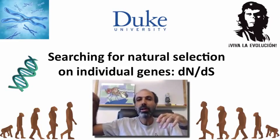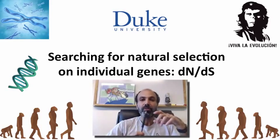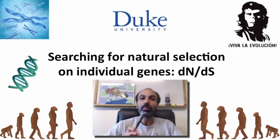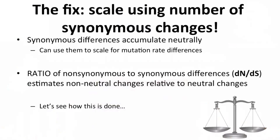In that case they bebop around within the population. In contrast, synonymous changes do not affect the final amino acid, so those are considered to be largely, though not completely, neutral. So what we do when we're trying to infer the action of natural selection is to try to scale the number of non-synonymous changes — the experimental group — with the number of synonymous changes, which are the ones thought to accumulate neutrally. We can use them to scale for possible mutation rate differences at different genes, looking for the ratio of non-synonymous to synonymous differences.